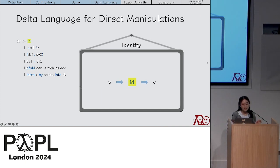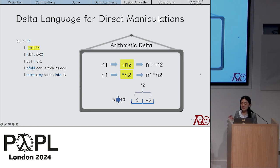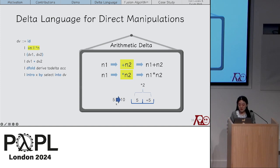The delta language uses deltas dv that act like functions or operations on values. The simplest construct is identity, which keeps a value unchanged. Arithmetic deltas include addition: applying plus-n2 to n1 gives n1+n2. Multiplications are similar. To change 5 to 10, two options exist: plus 5 or multiply 2 — these are different deltas that perform different program modifications.